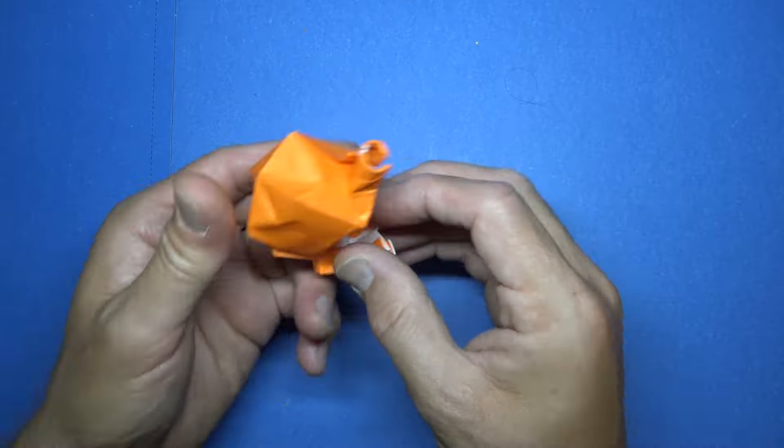Turn over. And fold this edge to this edge. Crease it sharply, and unfold and repeat. And unfold. Turn over.